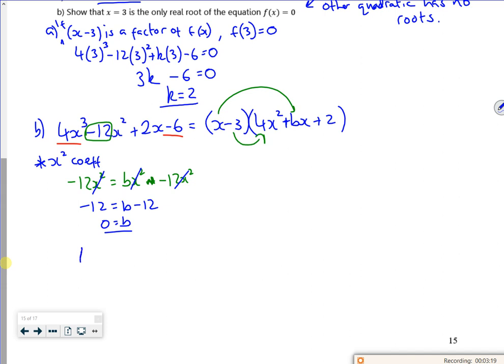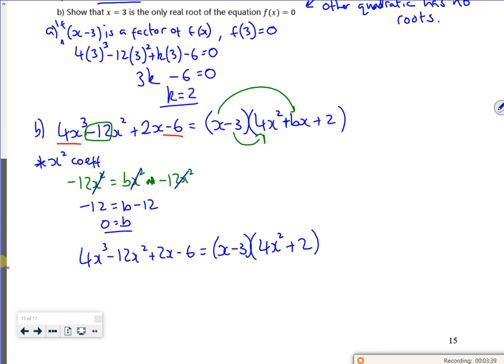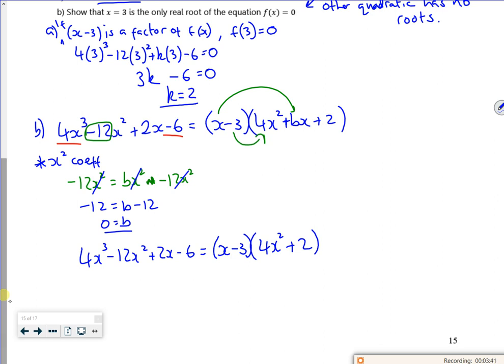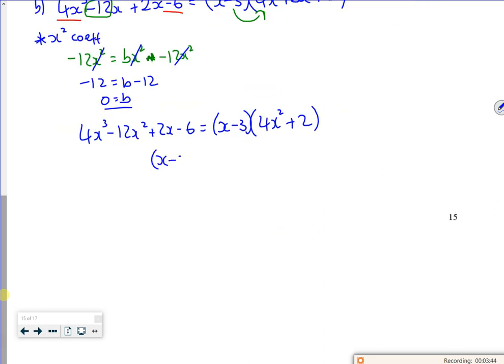So what I'm saying is that my 4x cubed minus 12x squared plus 2x minus 6 is x minus 3 multiplied by 4x squared plus 2. So I've got to show that x minus 3 is the only real factor. If I'm looking for solving it, I'm going to put it equal to 0. So that bit's fine.